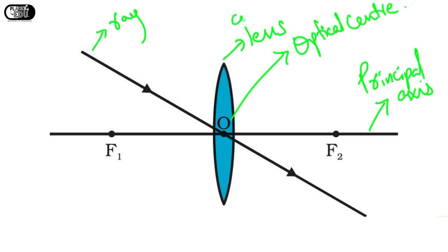This lens is particularly a convex lens, or we can also call it a biconvex lens.